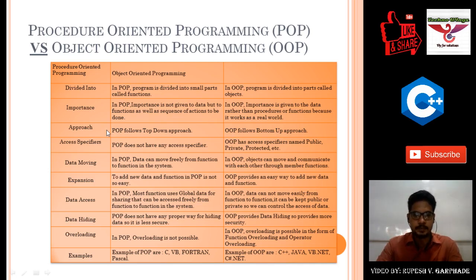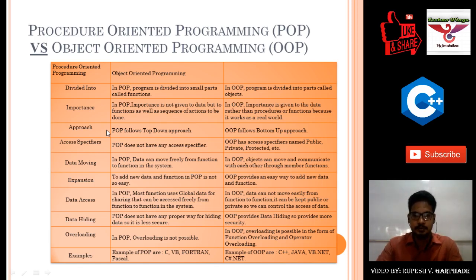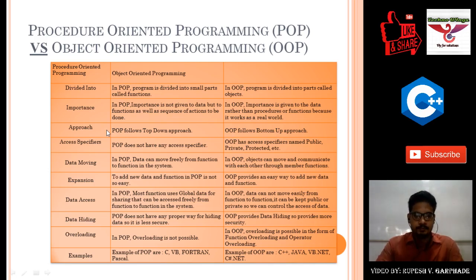Regarding expansion: adding new data and functions in procedure oriented programming is not easy. In C programming, if you need to add modifications or new data, you cannot easily do so. But in object oriented programming like C++, you can easily add new data and new functions because everything is in object form, and you can create multiple copies.